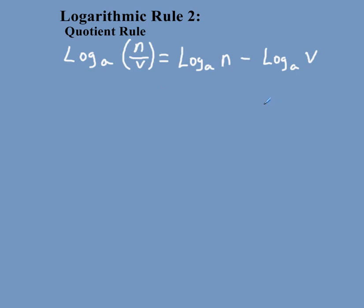And, for the most part, it works pretty much the same way. Let's say that you had log 2, and 4 over x. You could rewrite this as log 2, 4, minus log 2, x.